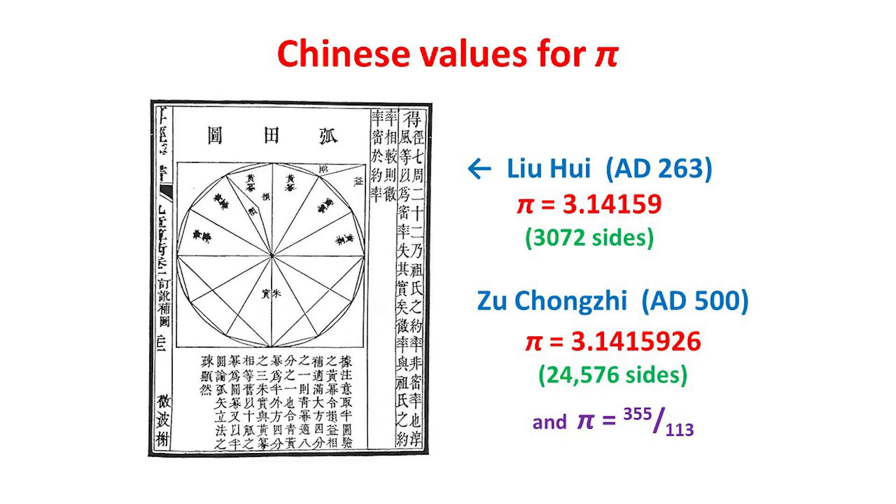Even more impressively, around the year 500, Zhu Zhongxi and his son doubled the number of sides three more times to polygons with over 24,000 sides, and obtained pi to six decimal places. They also improved Archimedes' fractional approximation of 22/7 to the more accurate 355/113, which also gives pi to six decimal places. This latter value wasn't rediscovered in Europe for a further thousand years.